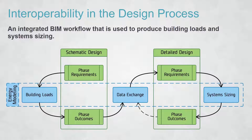What I've typically seen in the industry is that the initial model is done to produce your building loads, then you size your system accordingly. But the building ends up changing over this two- to three-month process, and the building loads never get updated — your systems are still being sized to these out-of-date loads. At the end, you're asked to create a LEED compliance report or ASHRAE 90.1 model, and the model just gets rebuilt, giving you two unrelated models — one simple at the beginning, one detailed at the end.